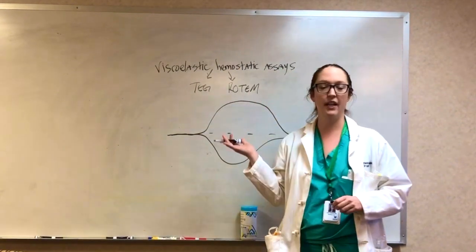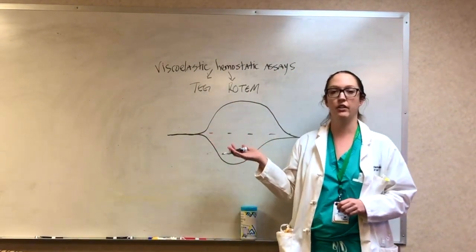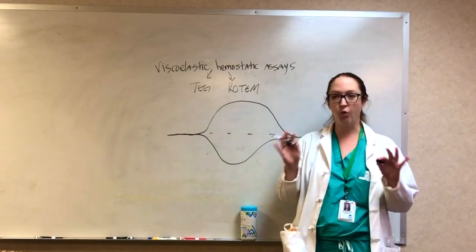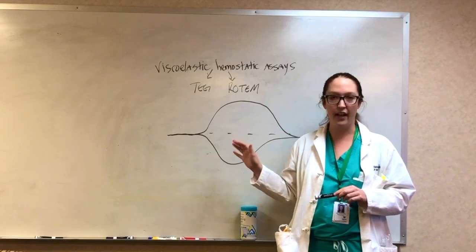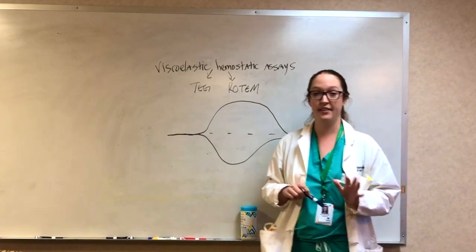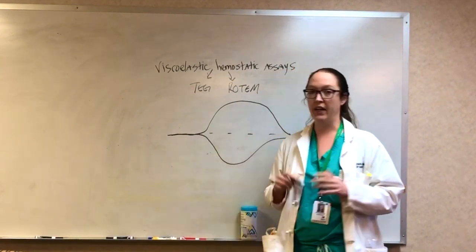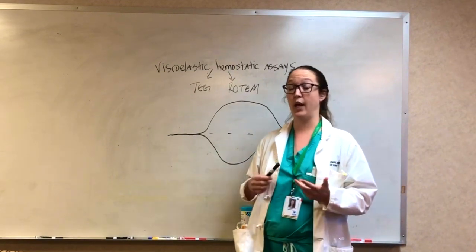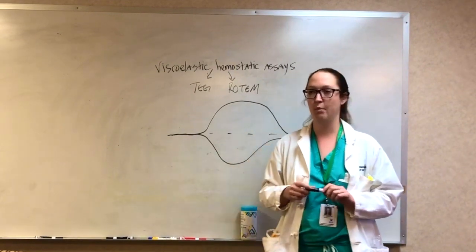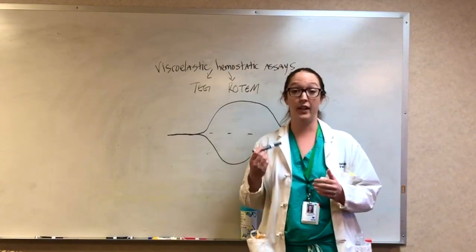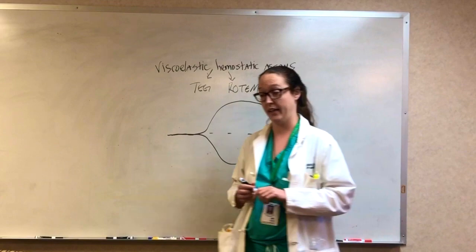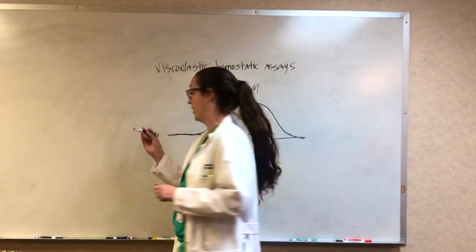So this would be a typical tracing that you would get on your TEG output. And there are really four measurements that we care about when we look at TEG. Before I get into that, as a side note, various institutions have different types of TEG that they perform. And the two most common ones that you're going to see are citrated Kaolin TEGs and citrated Rapid TEGs, and I'll talk briefly about the difference between those.